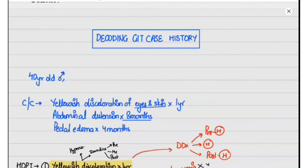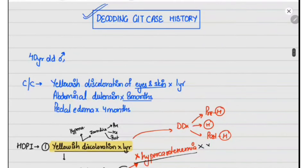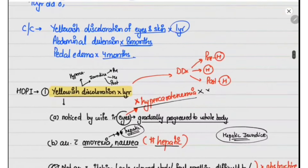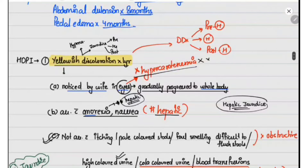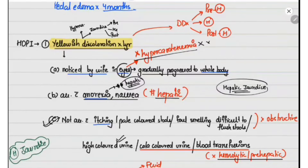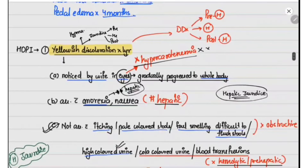In this video we'll be discussing how to decode a GIT case history. We have a 40-year-old male who presented with chief complaints of yellowish discoloration of eyes and skin since one year, abdominal distension since eight months, and pedal edema since four months. The history of present illness: the patient presented with yellowish discoloration of eyes and skin since one year, which was noticed by his wife initially in the eyes and then gradually progressed to the whole body. It is associated with anorexia and nausea, but not associated with itching, pale-colored stools, foul-smelling difficult-to-flush stools, high-colored urine, cola-colored urine, or multiple blood transfusions.